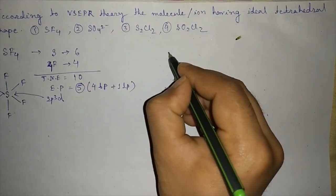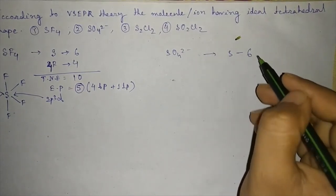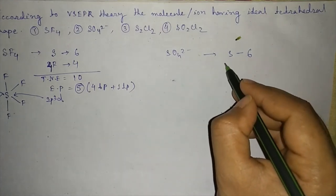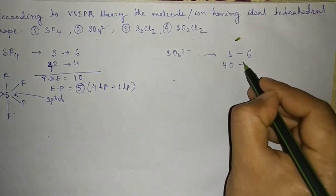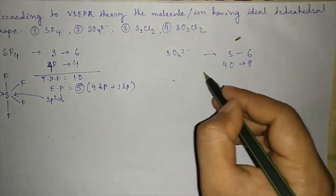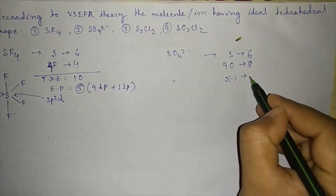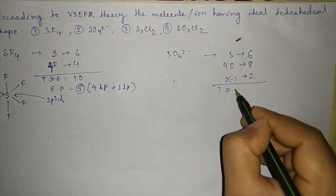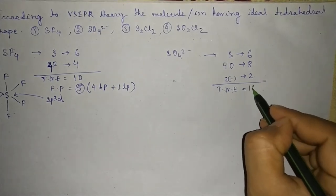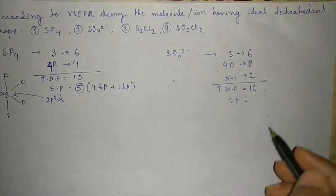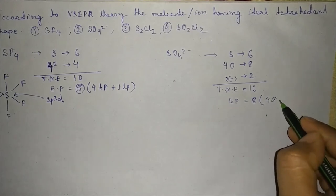We will come next to SO4^2-. Sulfur has 6 valence shell electrons and each oxygen will contribute 2, so for 4 oxygens we get 8 electrons, and 2 negative charge will give 2 electrons. So total number of electrons equal to 16. Electron pairs equal to 8.